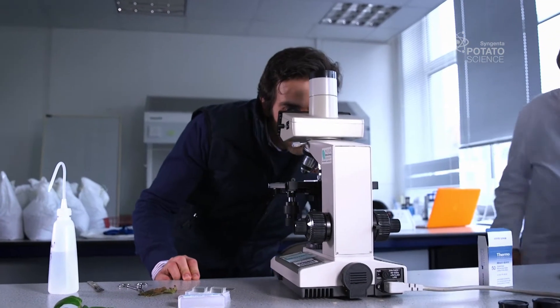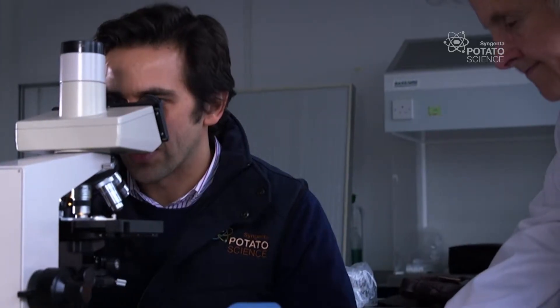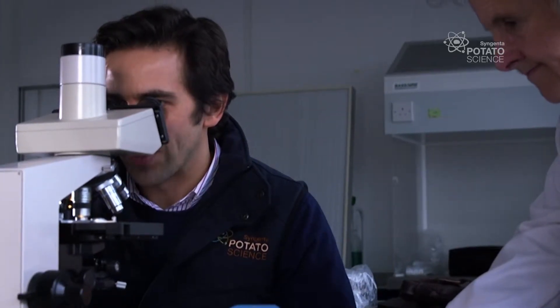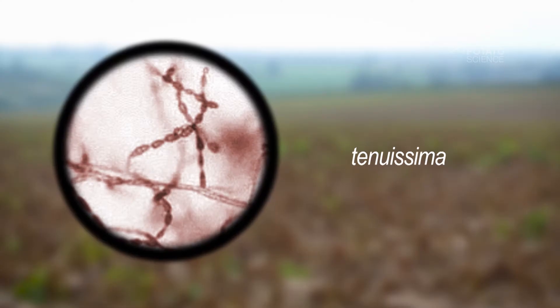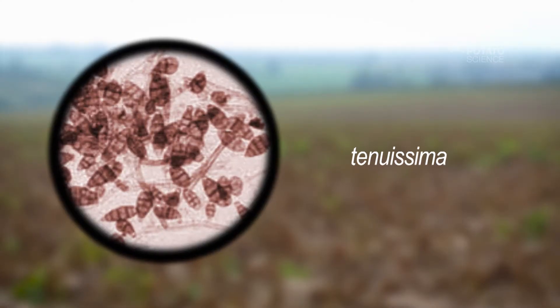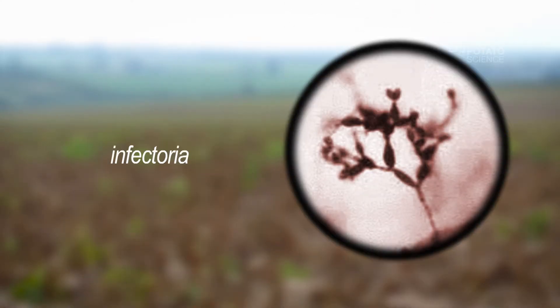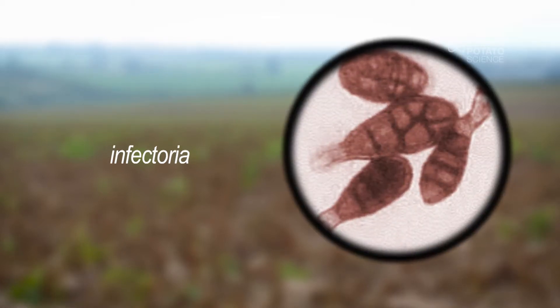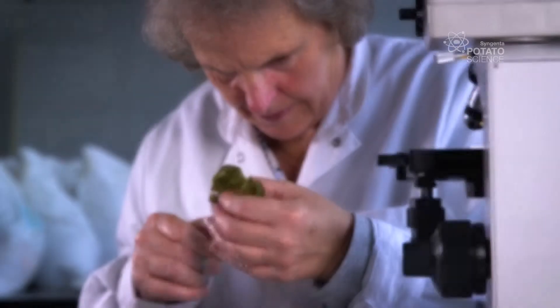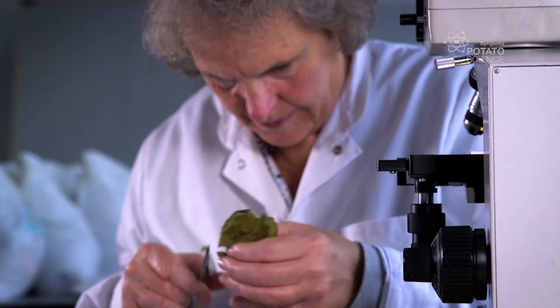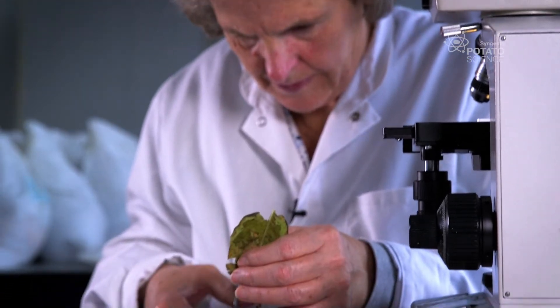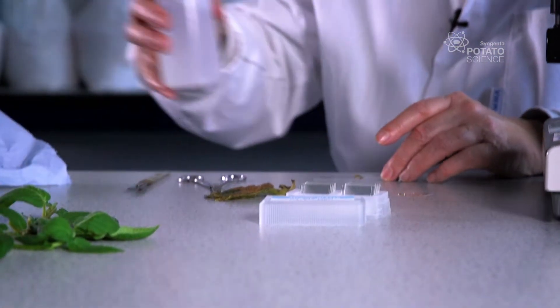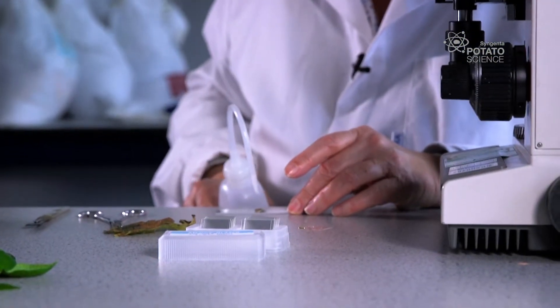We see Alternaria alternata on most of the samples that we receive, or possibly one or two other species — Alternaria tenuissima and Alternaria infectoria — which we think are just secondary. But that's part of the studentship as well, looking at the interaction of the species when they're both inoculated onto a leaf.